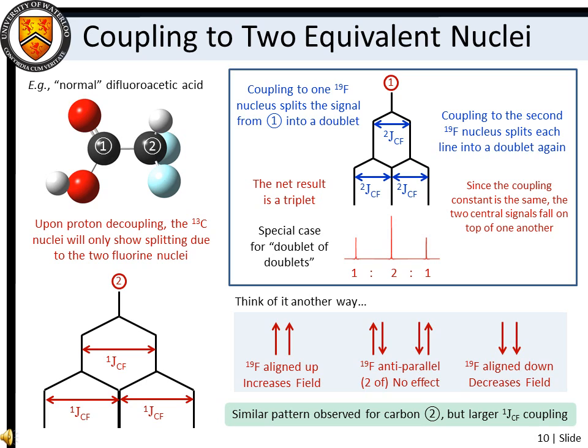We can also think about this from an alignment standpoint. For two equivalent nuclei, there is one spin arrangement that can lead to an increased effective magnetic field, two spin arrangements whereby the effective field is unchanged, and one spin arrangement that leads to a decreased effective magnetic field.